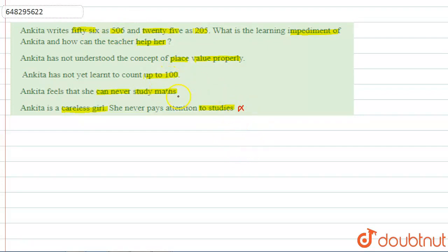Option C says Ankita feels she can never study math. If the teacher helps her a little bit, then it doesn't mean she can't focus on study. Definitely she can be helped. If she gets good guidance, she can learn math. Feeling is different, but with help she will definitely do it. We don't consider this point.